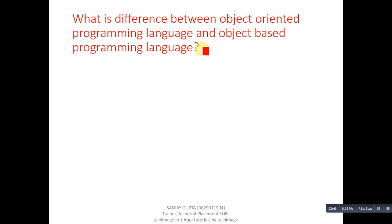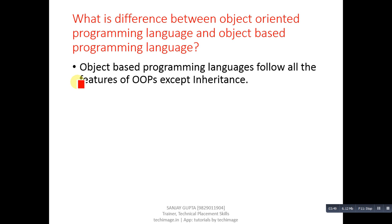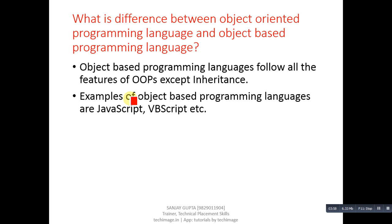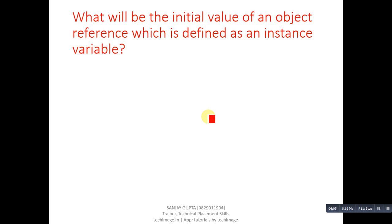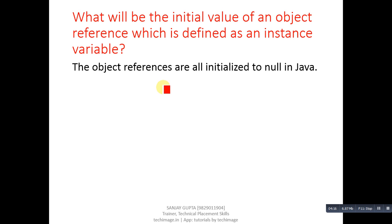Next question: what is the difference between an object-oriented programming language and an object-based programming language? Object-based programming languages follow all the features of OOP except inheritance. Examples of object-based programming languages are JavaScript and VBScript. What will be the initial value of an object reference defined as an instance variable? The object references are all initialized to null in Java.